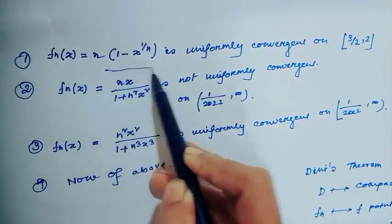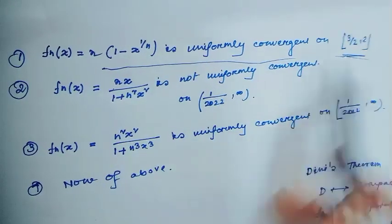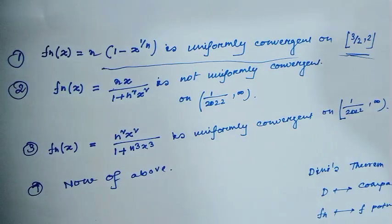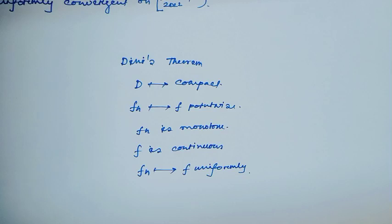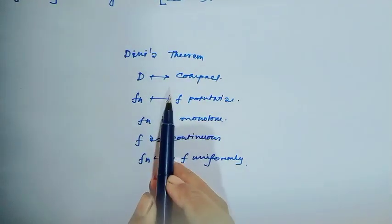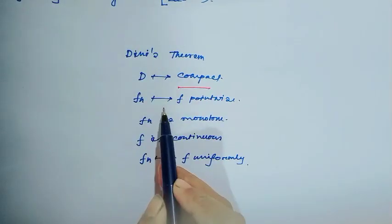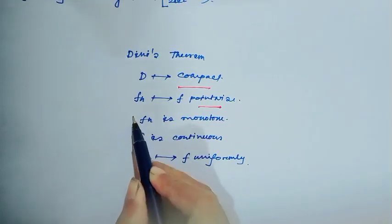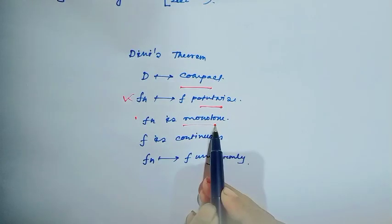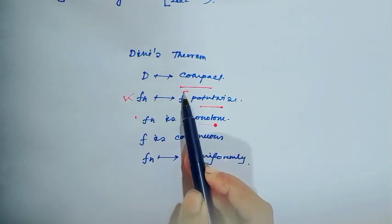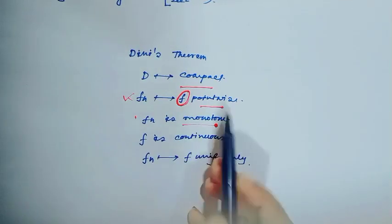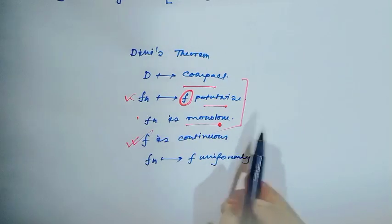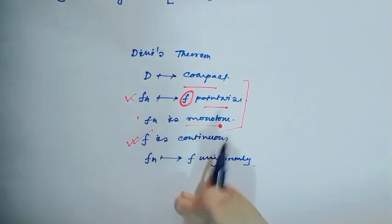For the first option, this sequence is uniformly convergent on the closed interval. I will use Dini's theorem, so let me recall it. The statement of Dini's theorem: if the given set is compact and fn converges to f pointwise, and if fn is monotone — either monotone increasing or monotone decreasing — and fn converges to f pointwise where f is continuous, then we can conclude the sequence of functions fn converges to f uniformly.